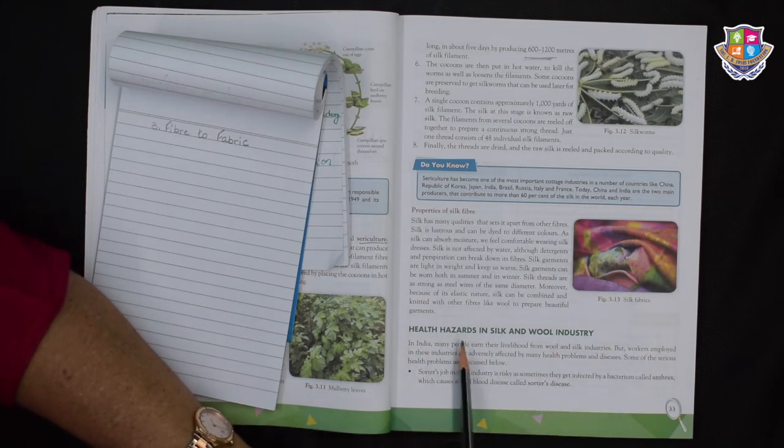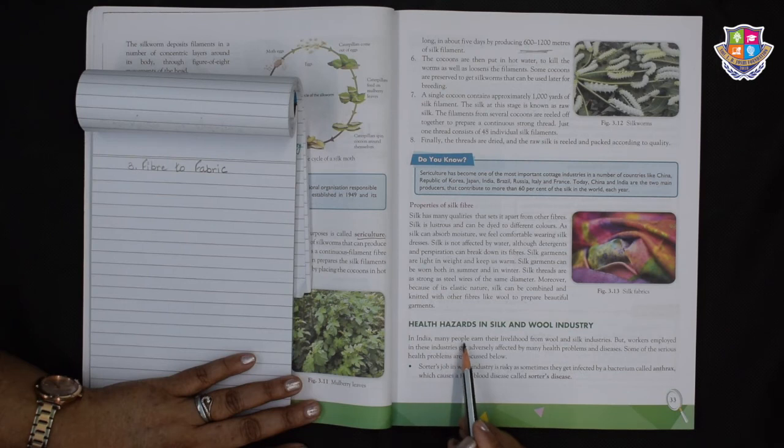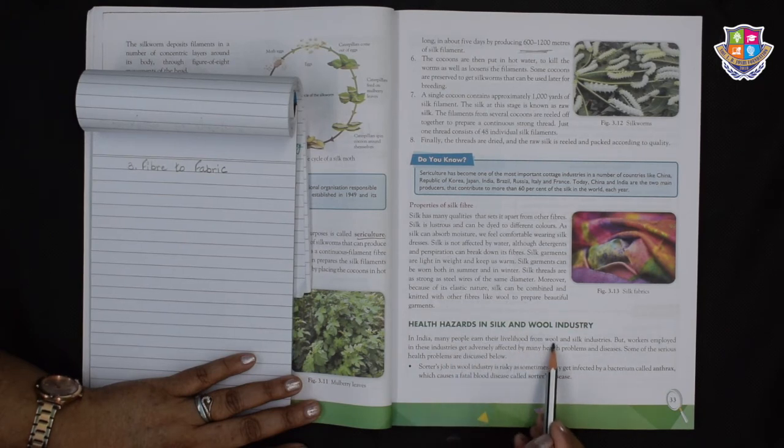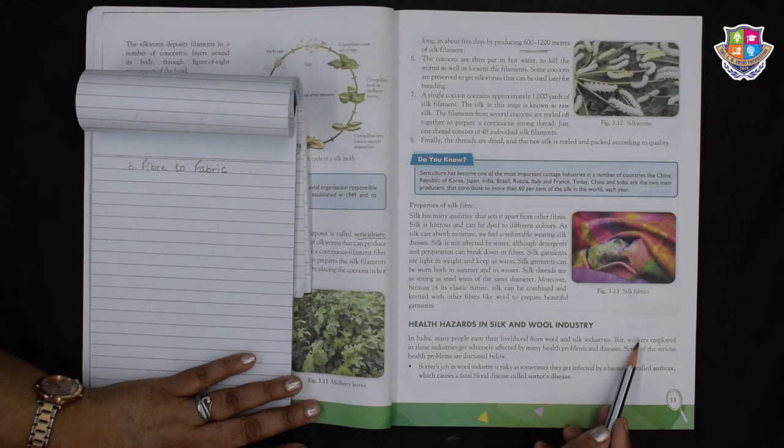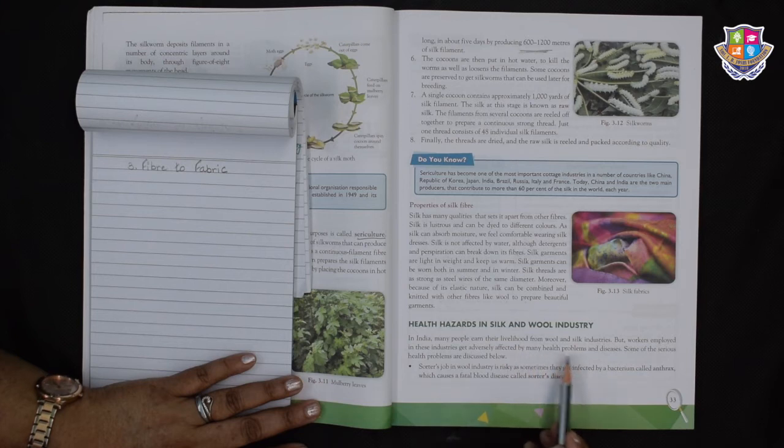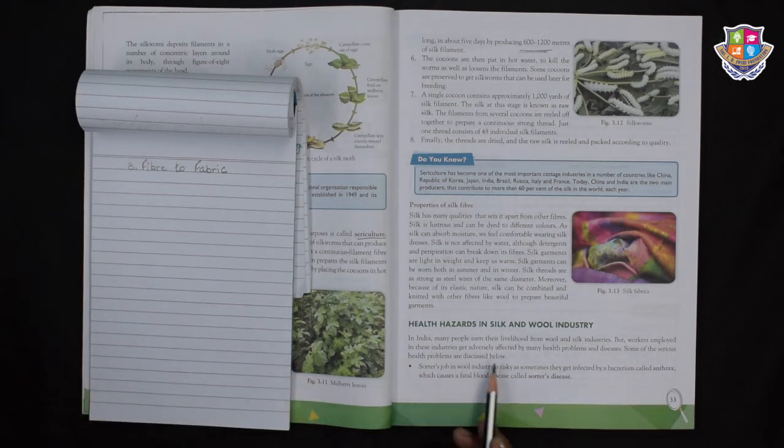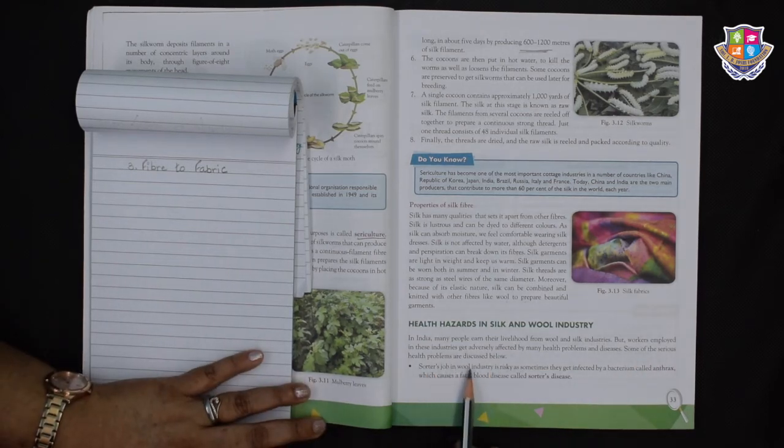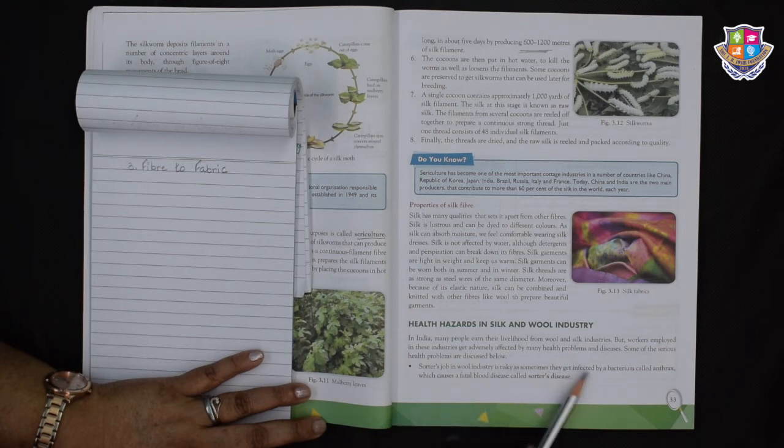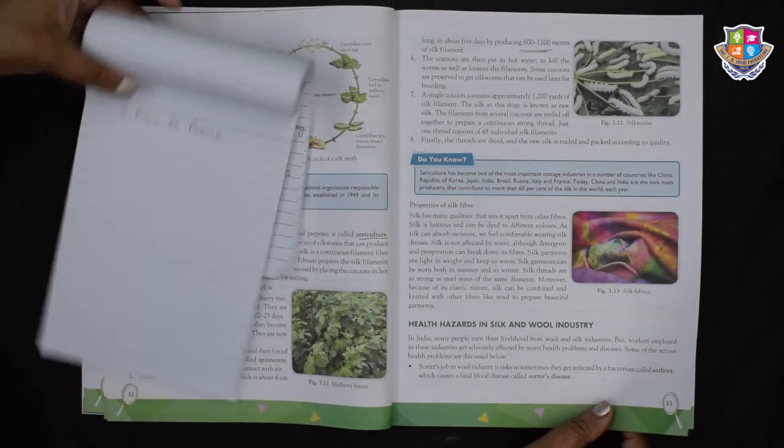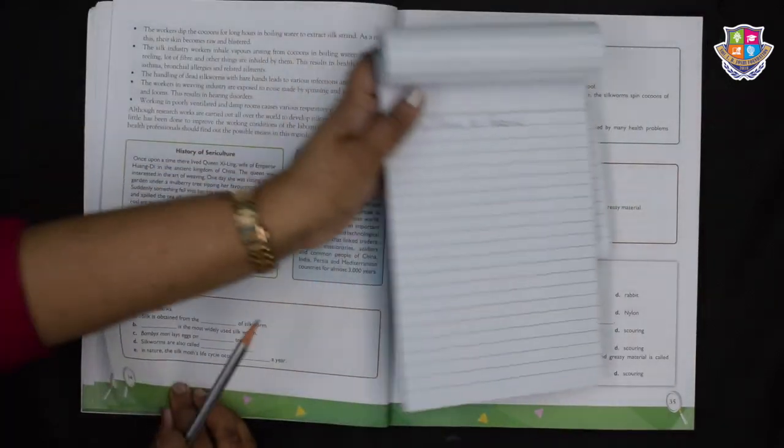Now let's see the health hazards in silk and wool industry. In India, many people earn their livelihood from wool and silk industries. But workers employed in these industries get adversely affected by many health problems and diseases. Some of the serious health problems are discussed below. Sorter's job in the wool industry is risky as sometimes they get infected by a bacterium called anthrax which causes a fatal blood disease called Sorter's disease. Goodness me, that's a very serious disease.